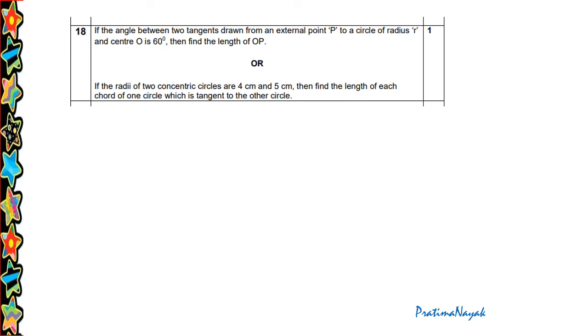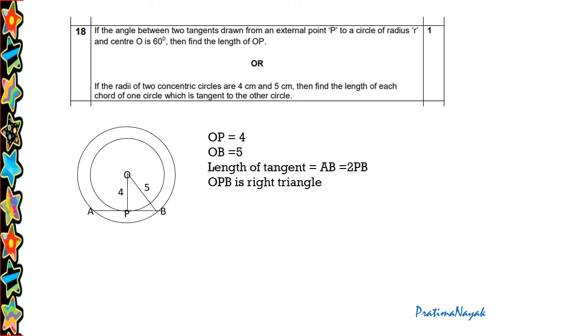Question 18 OR: If the radii of two concentric circles are 4 cm and 5 cm, then find the length of each chord of one circle which is tangent to the other circle. So for this we have to draw two concentric circles, and the radius of the smaller is 4 and bigger is 5. As shown in the figure, length of the tangent AB equals 2 times of PB. So we can use the Pythagoras theorem. So PB square equals 5 square minus 4 square under root. So whole thing is twice 5 square minus 4 square under root. That will be 3. So 2 into 3 is 6.